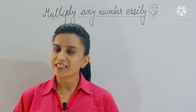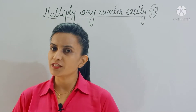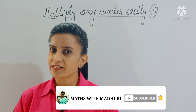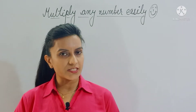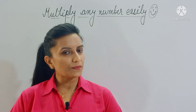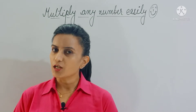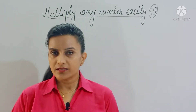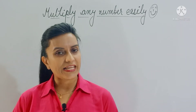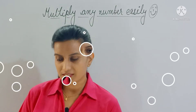Hello everyone, welcome back to the multiplication series. In my previous videos you have already learned how to multiply 2D by 2D, 3D by 3D, and 4D by 4D. Those who have not seen those videos can find the link in the description box below. Now you must be wondering, in case we have to multiply 2D by 3D or 3D by 4D, which new pattern we will follow — but don't worry, we don't have to follow any new pattern. Let's take a few examples.